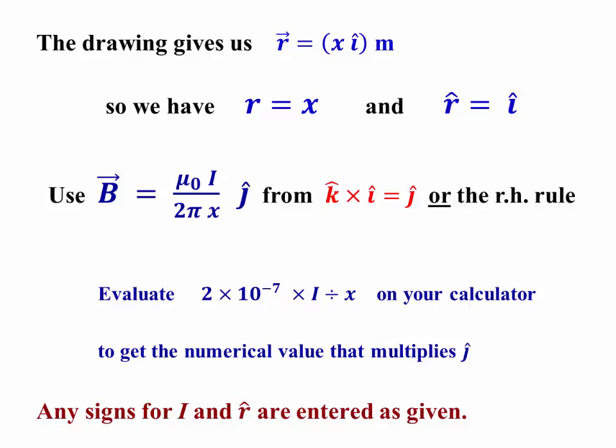Computing, we're just going to have mu naught over 2 pi is 2 times 10 to the minus 7. Multiply that times the current i, divide it by x. In this case, the sign of the current is entered there when you plug in the number for i. And r hat has been already accounted for in calculating the unit vector j hat.